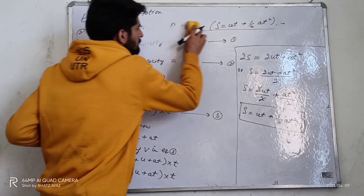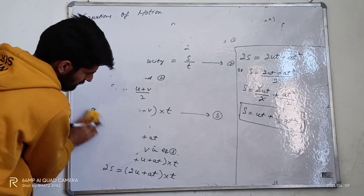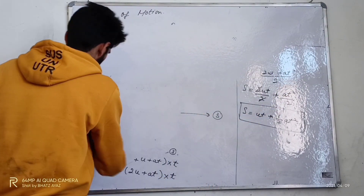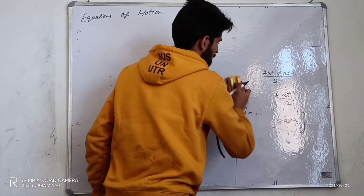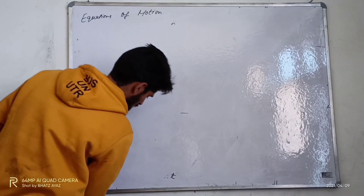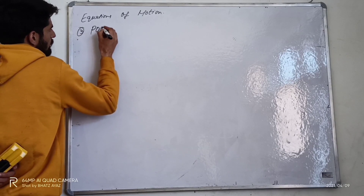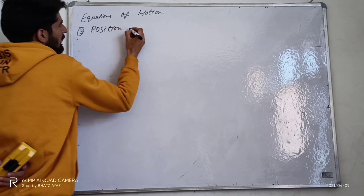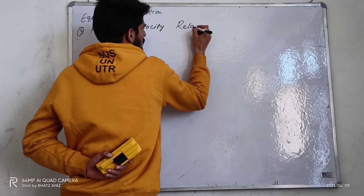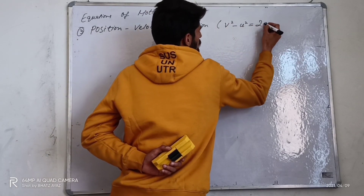Now we are going to derive the third one, that is the position-velocity relation, and that equation is v squared minus u squared is equal to 2as.